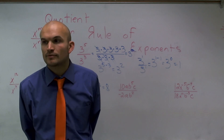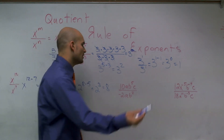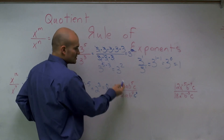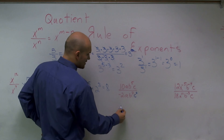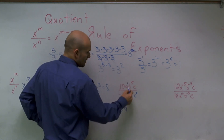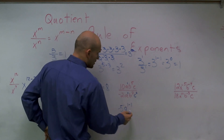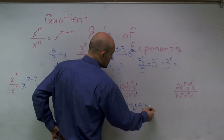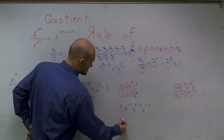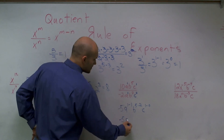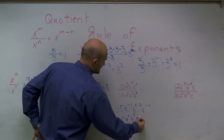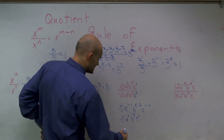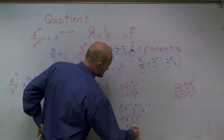Now if you notice, I don't have a c on the bottom, so what am I going to subtract c's exponent from? Well, we can write c raised to the 0, because we know c raised to the 0 equals 1. So this is just a regular division problem: 10 divided by negative 2 is negative 5. a to the first divided by a to the first is 1 minus 1; b to the fifth minus 2; and c to the first minus 0. That gives me a to the 0, b to the third, and c to the first. Since a to the 0 is 1, we're no longer going to have an a term, and c to the first is just c. So my final solution is negative 5 b cubed times c.